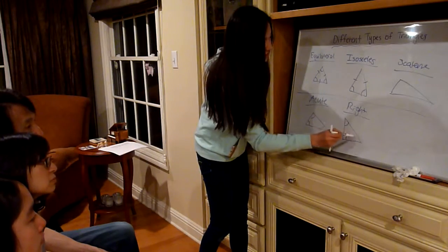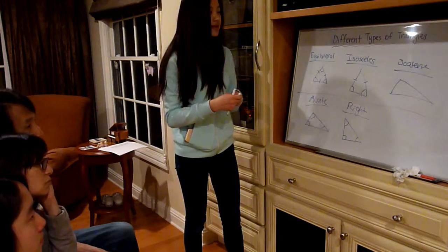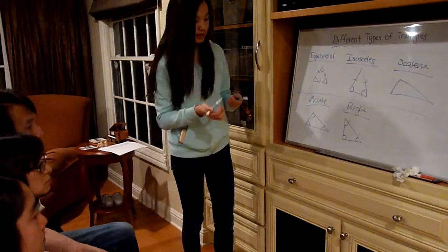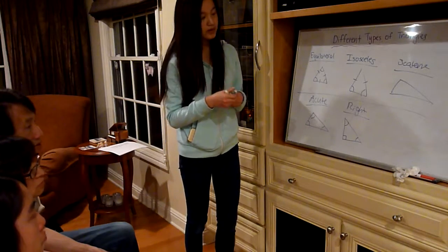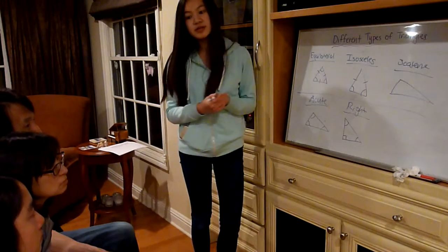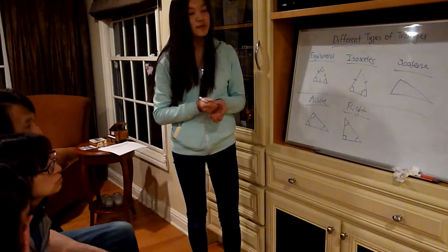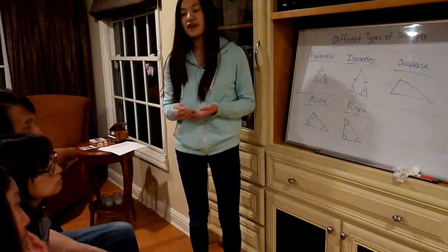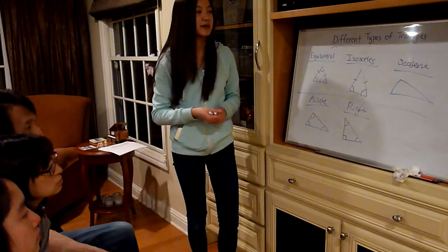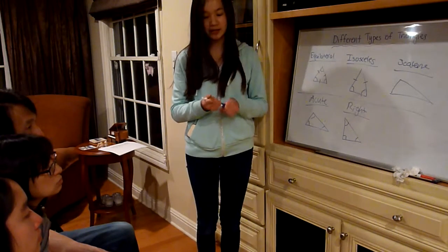For any right triangle, the other two angles will either have to be 30 degrees and 60 degrees, or 45 and 45, in order to make up the 180 degrees in a triangle.